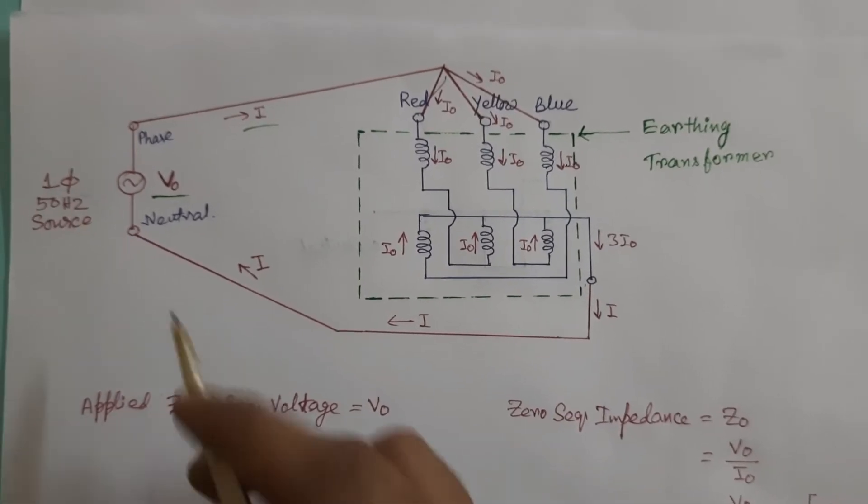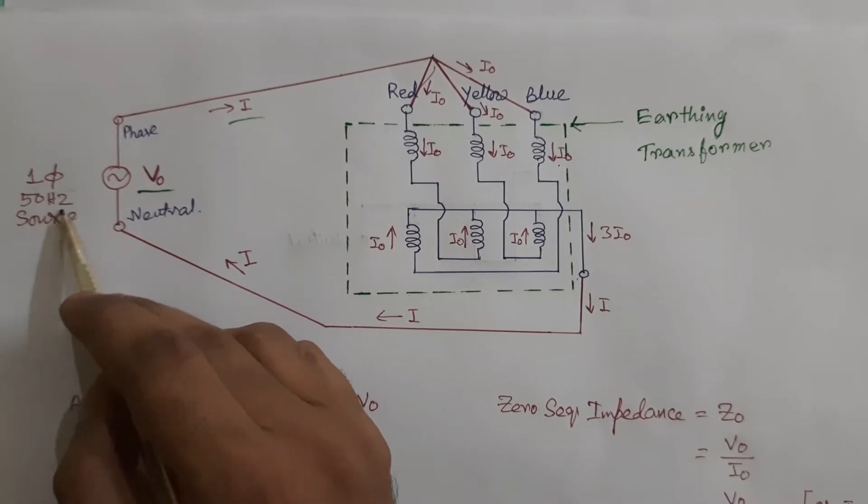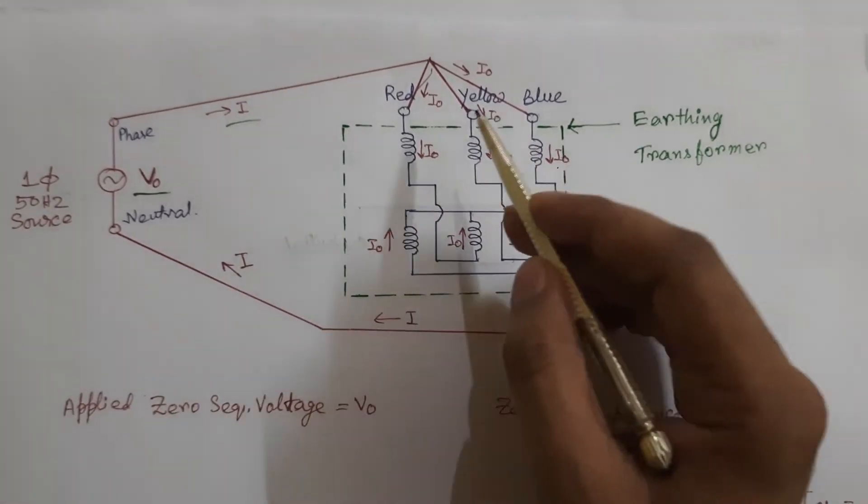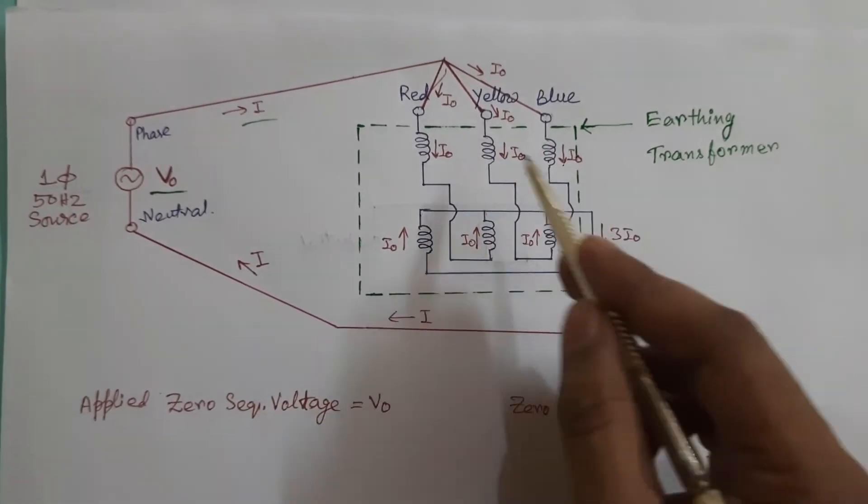Instead of using a three-phase supply, if we use a single-phase 50 hertz source to apply all of the red, yellow and blue phase of this earthing transformer,